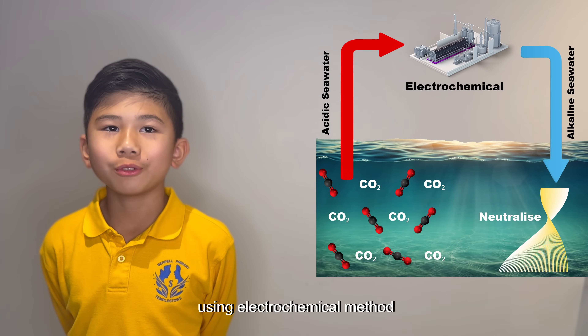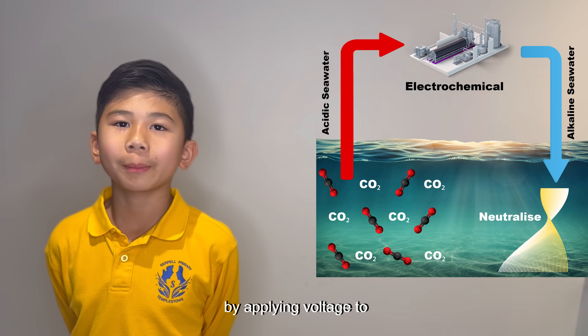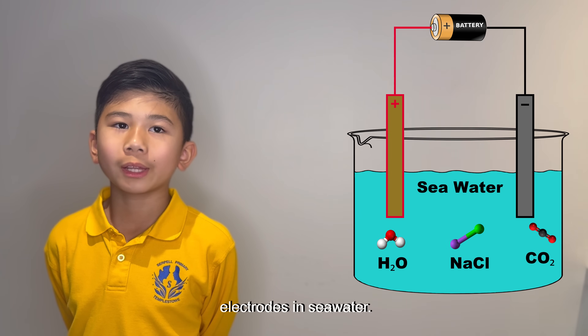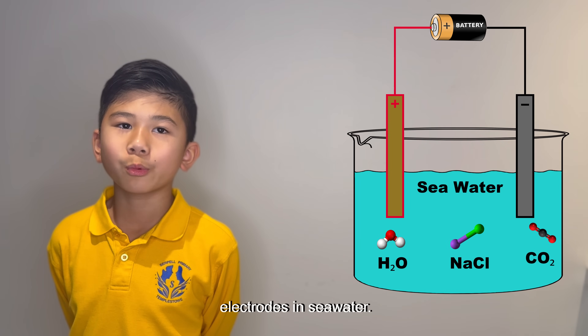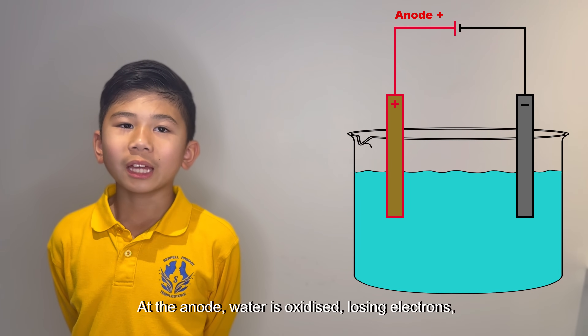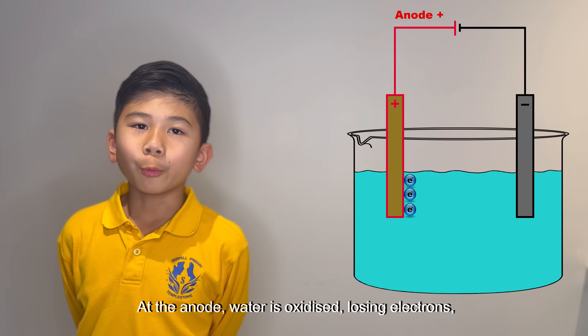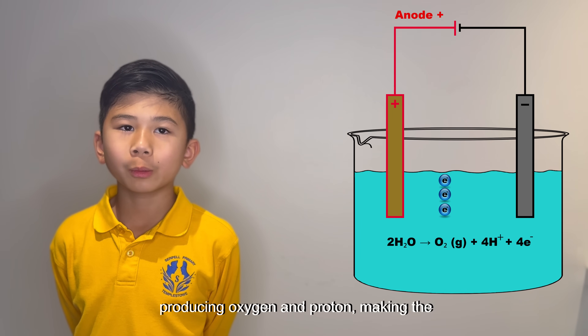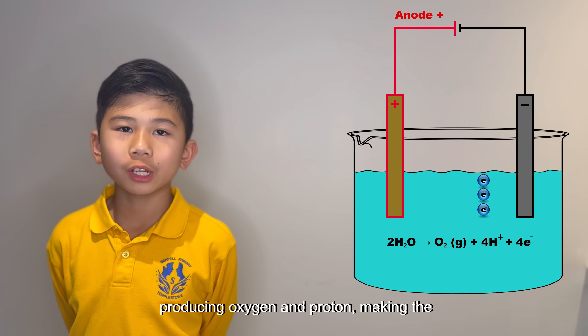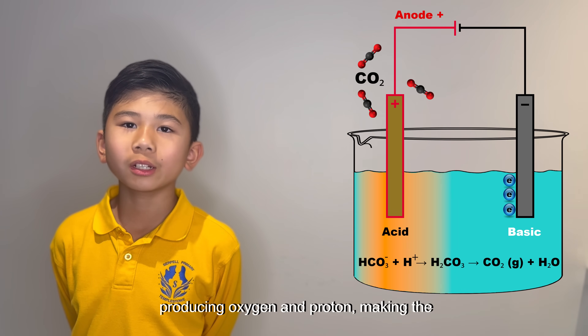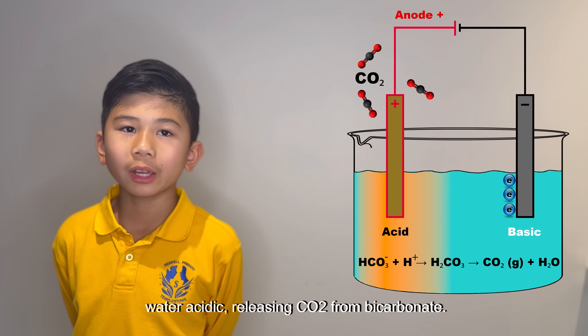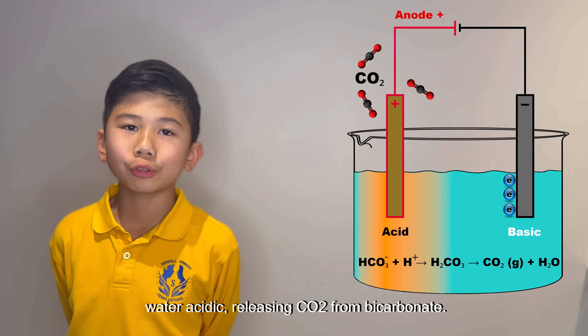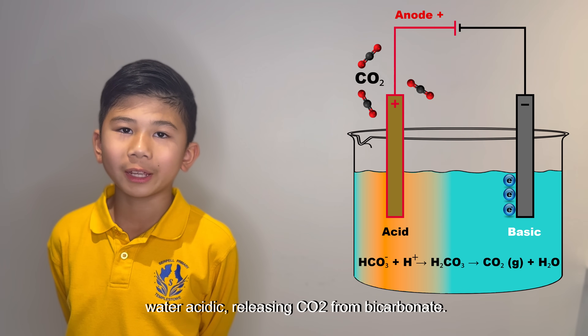CO2 can be removed from the ocean using electrochemical methods by applying voltage to electrodes in seawater. At the anode, water is oxidised, losing electrons, reducing oxygen and protons, making the water acidic, releasing CO2 from the bicarbonate.